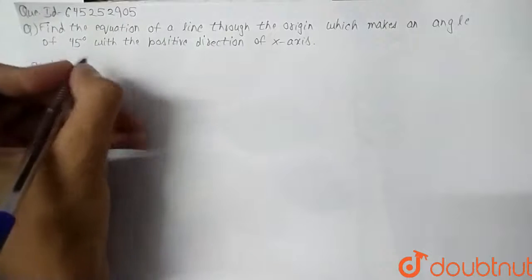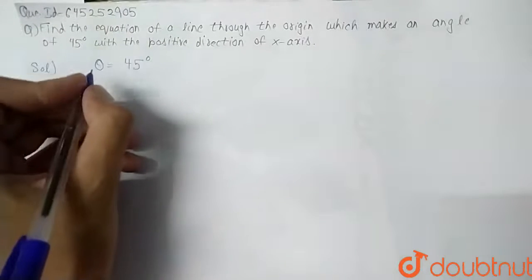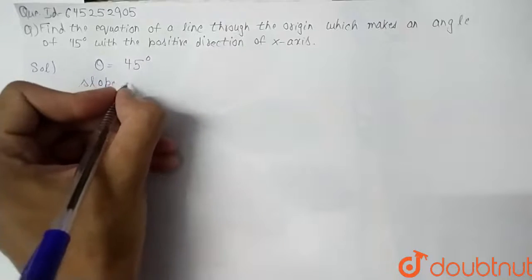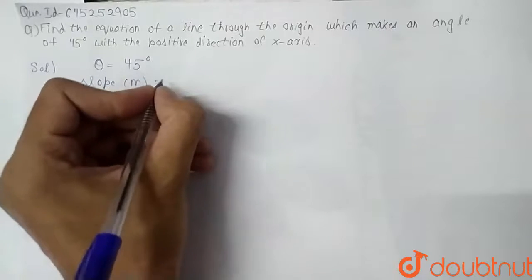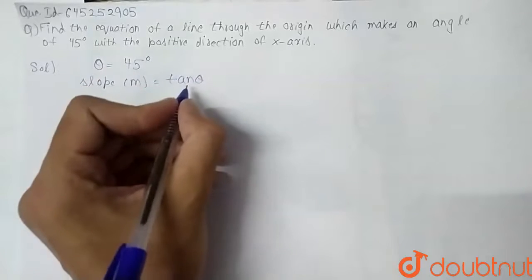They are given that the line makes a 45 degree angle with the positive x-axis. So we can say that theta equals 45 degrees. We know that in a line, the slope m equals tan theta.